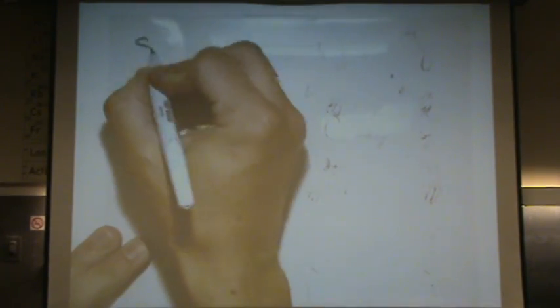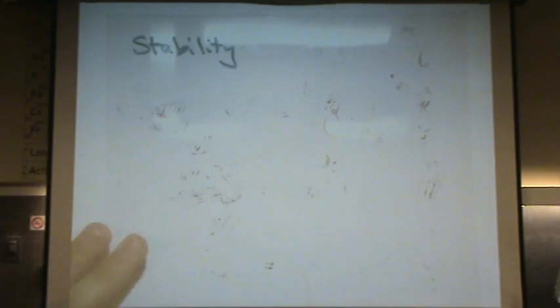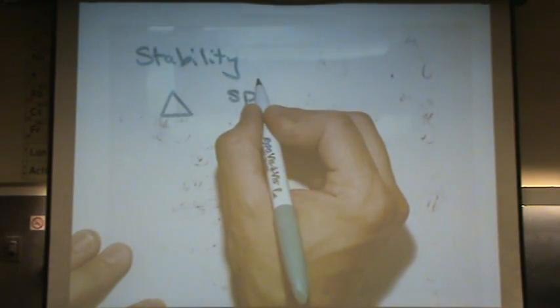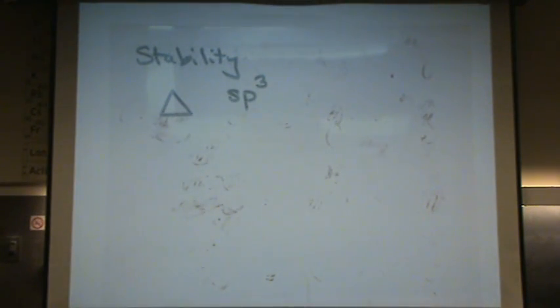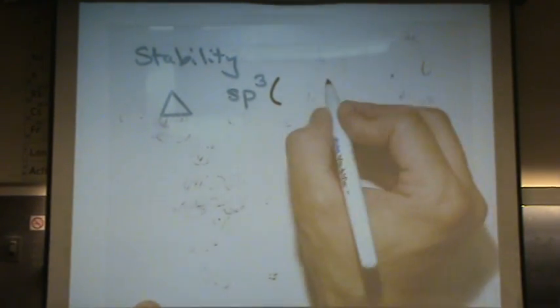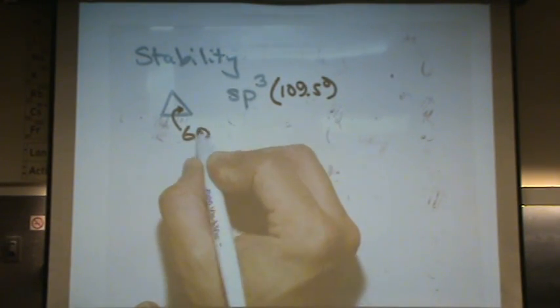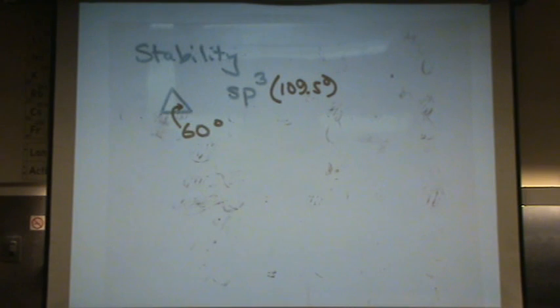There are a couple other things about rings. One is stability — rings have various degrees of stability. Let me draw this. What's that called? Cyclopropane. Each carbon has what hybridization? It's all single bonds, so it's got to be sp3. What's the problem with that? What's the ideal bond angle for sp3? 109.5. If you know math, what's the bond angle right there? 60. So you can see it varies a lot.